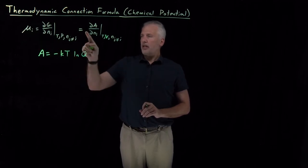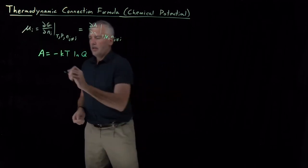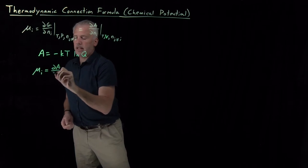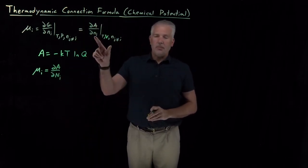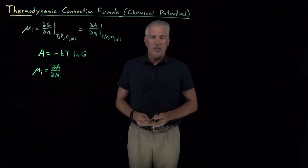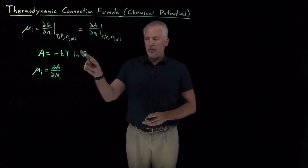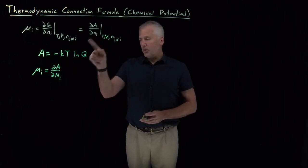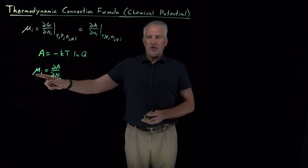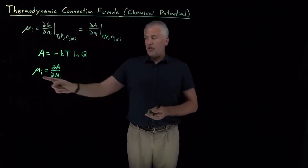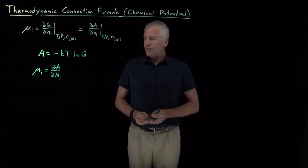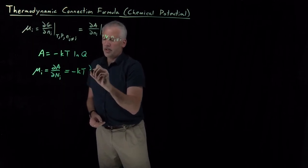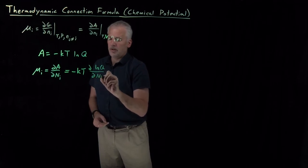So we just need to take the derivative dA/dN. I'm going to make a slight change here: instead of taking the derivative with respect to the number of moles, I'm going to take the derivative with respect to the number of molecules of component i, because that's usually how we think of partition functions — in terms of number of molecules rather than number of moles. So the chemical potential will be in joules per individual molecule rather than joules per mole. Since we know what A is equal to, I just need to take the derivative of ln q with respect to the number of molecules.